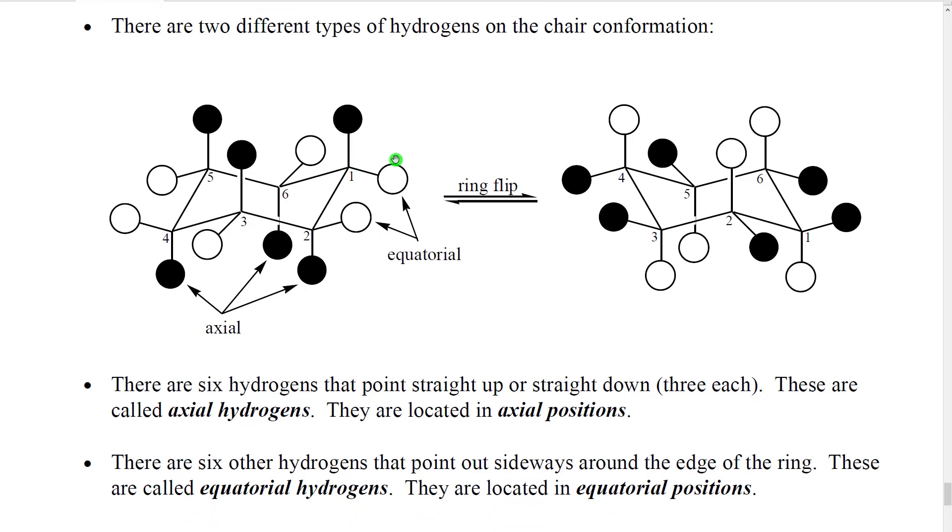Now, one interesting thing about this is that we can, or the ring can, by vibrating and rotating, it can eventually flip so that instead of having carbon 1 pointing up and carbon 4 pointing down, they flip around so now carbon 4 is pointing up and carbon 1 is pointing down. And when that occurs, that changes the position of a given group from axial to equatorial in the flipped chair, or equatorial to axial.